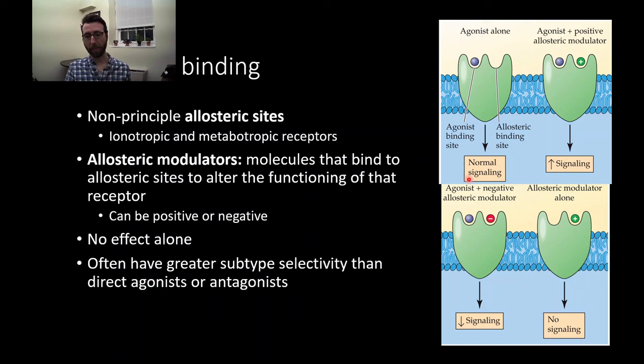Now, conversely, here we have an agonist plus a negative allosteric modulator. This negative allosteric modulator is going to tone down the efficacy of this receptor. So when this agonist binds, it's going to produce some signaling, but decreased in some way relative to its normal strength. Finally, here we have an allosteric modulator alone. There's nothing occupying the principal binding site. And as a result, we have no signaling. The positive allosteric modulator does nothing on its own. It needs something to activate the principal site or else it does nothing.